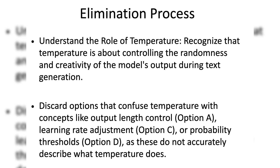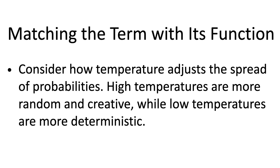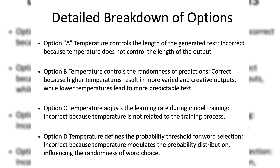Now match the term with its function. Consider how temperature adjusts the spread of probabilities — high temperatures result in more random and creative output, while low temperatures result in more deterministic output. Let's take a look at each option one by one.